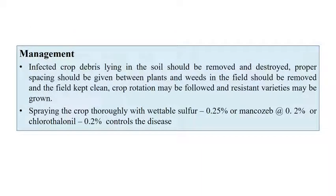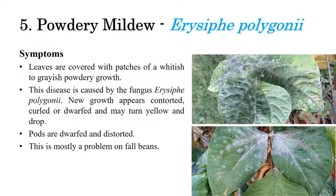Later, teliosore formation occurs — the reddish-brown color spots slowly convert to dark brown or black color. For management: destroy crop debris and stubbles from earlier cropping seasons; maintain proper spacing; keep the field clean; use crop rotation. Spray with wettable sulfur at 0.25% or mancozeb at 0.2%, and chlorothalonil can also be recommended to control this disease.